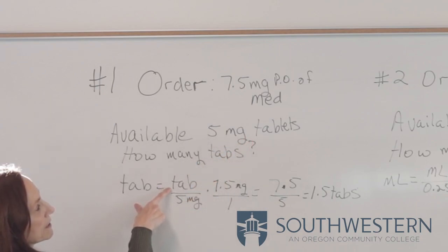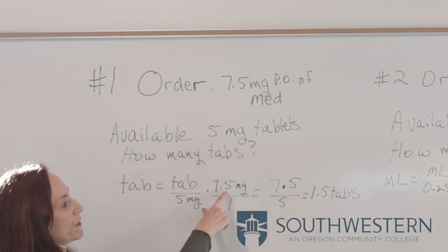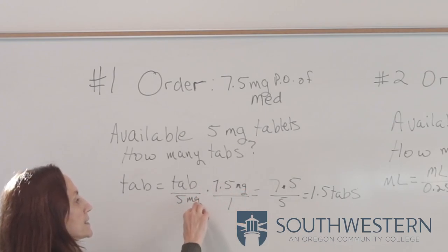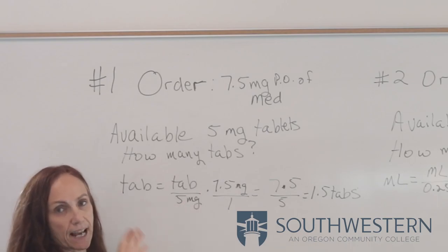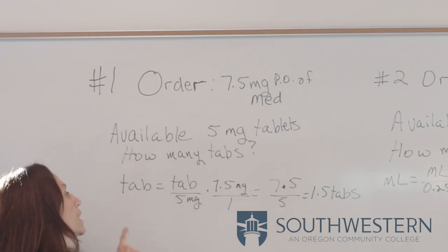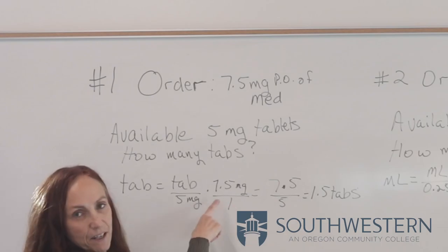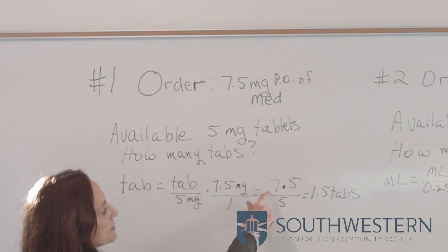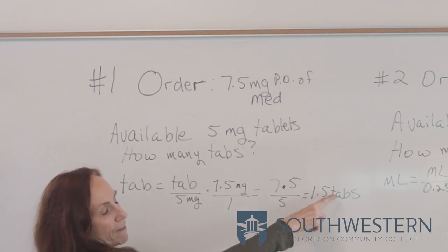One tablet is 5 milligrams — that's what the pharmacist gave me. I multiply it by what was ordered: 7.5 milligrams. With dimensional analysis, you put units across from each other so they cancel out. So I have 7.5 milligrams over 1 as a placeholder, multiply across: 7.5 over 5, divide 7.5 by 5, and I get 1.5 tablets.